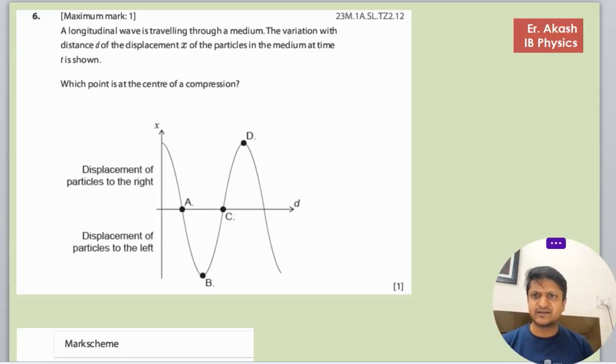There's a question that says a longitudinal wave is traveling through a medium. The variation with distance d of the displacement x of the particles in the medium at time t is shown. Which point is at the center of a compression? Displacement of particles to the right and displacement of particles to the left is given.